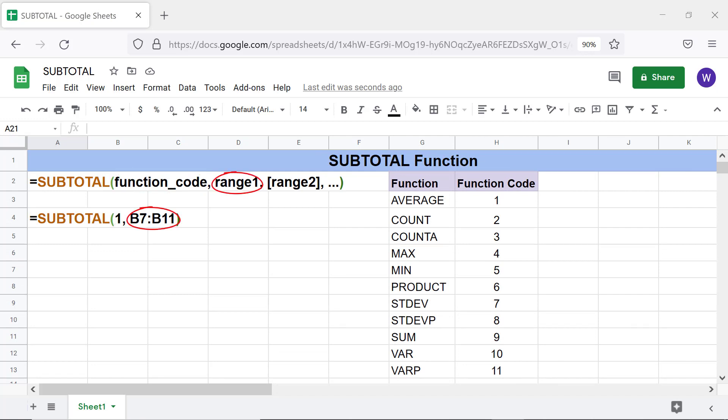Range 1 is the first vertical range of cells with numbers for which you want to apply a Subtotal function. Range 2 and subsequent ranges are optional.